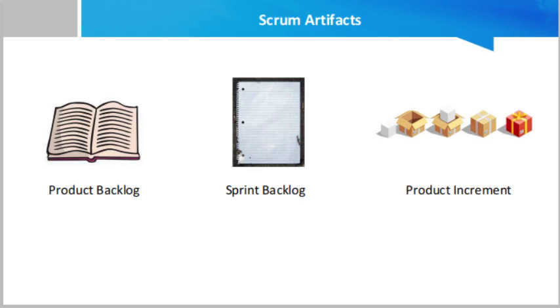When we talk about scrum artifacts, we have three artifacts mainly in scrum: product backlog, sprint backlog, and the product increment. So first we shall discuss about product backlog.